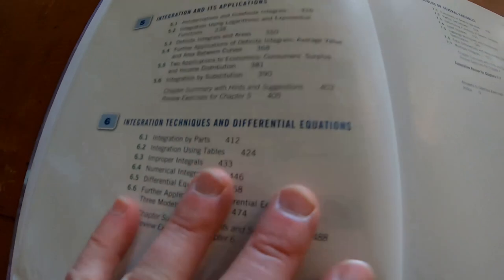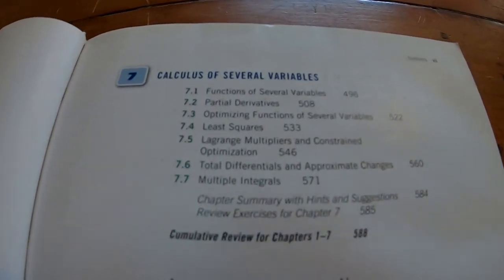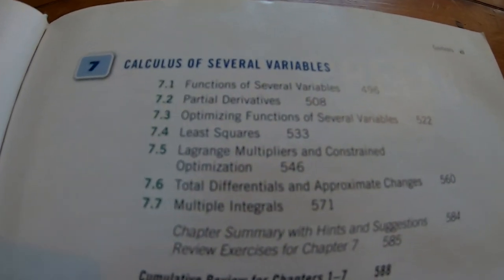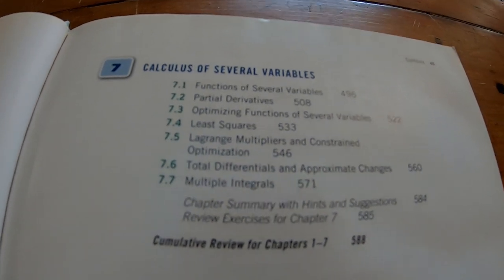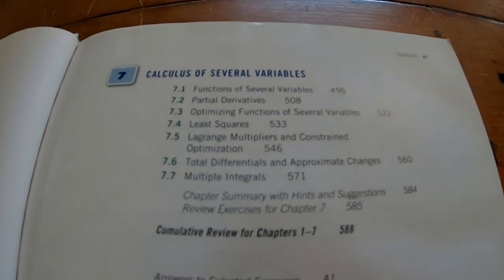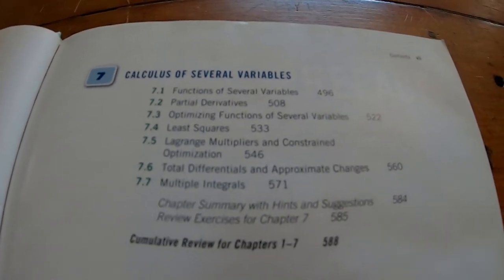And then over here, this is where it gets nuts. It has Calculus 3. Look at that. Lagrange multipliers, in a book written for people where you don't need to know trig. So you can learn Calculus 3 without knowing any trig.